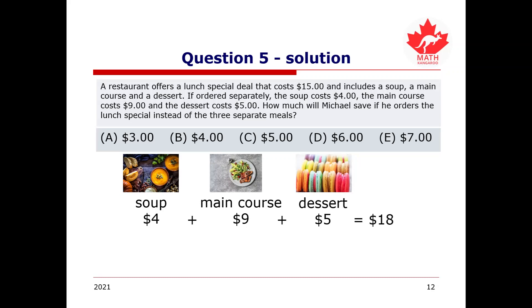Now, we know that the special costs $15, and we want to know how much money Michael will save if he orders the lunch special rather than ordering them separately. So, we can take our $18 and subtract it by $15, giving us $3. Therefore, Michael will be saving $3, and our answer will be A, three.